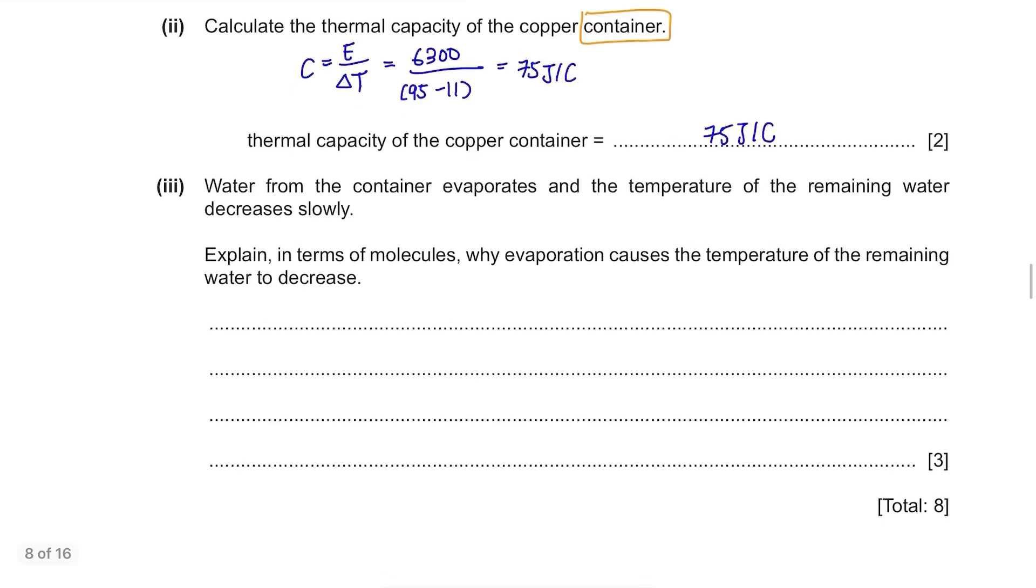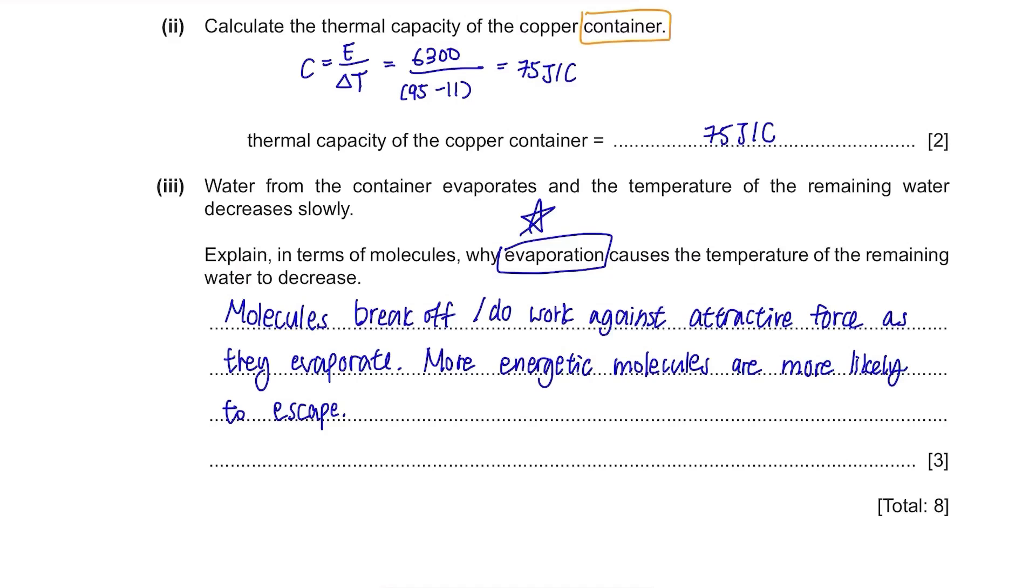Water from the container evaporates and the temperature of the remaining water decreases slowly. Explain in terms of molecules why evaporation causes the temperature of the remaining water to decrease. This question is more about the process of evaporation. So when molecules evaporate, they first break off the attractive force that hold them together. In order to do that, it needs to carry a lot of energy so the more energetic molecules are more likely to escape. Hence the remaining molecules are of less energetic molecules and the average energy of remaining molecules decreases.